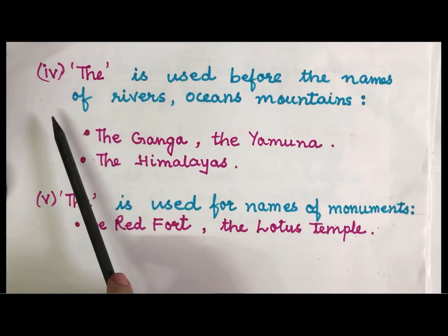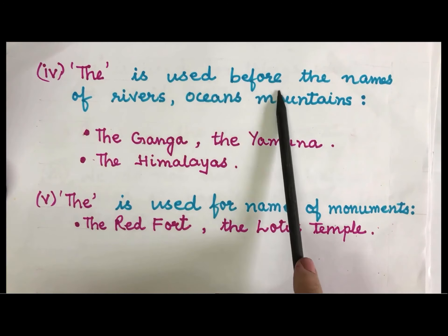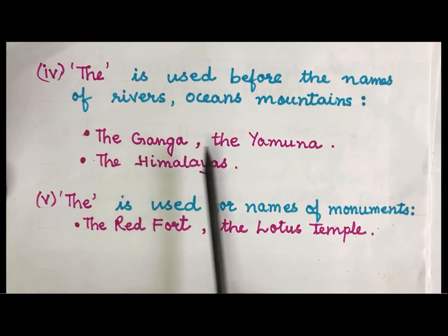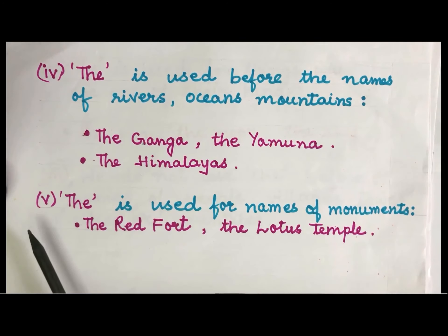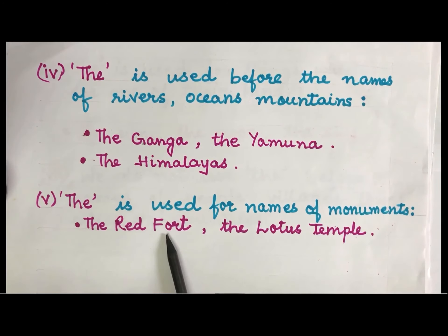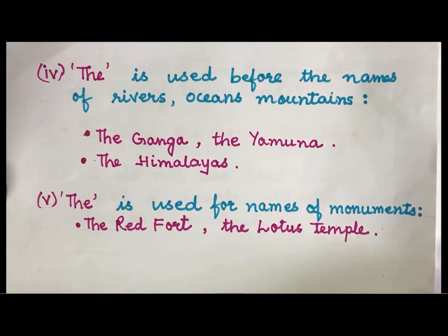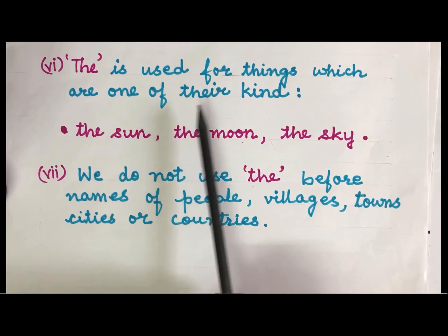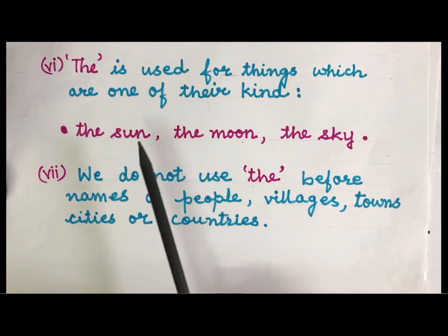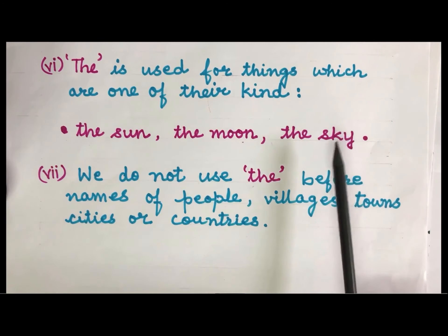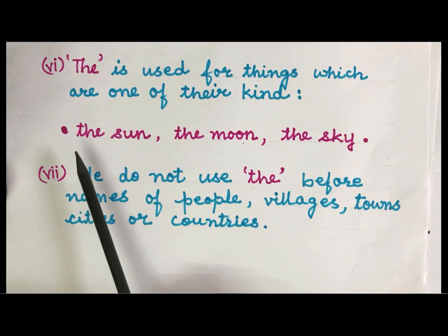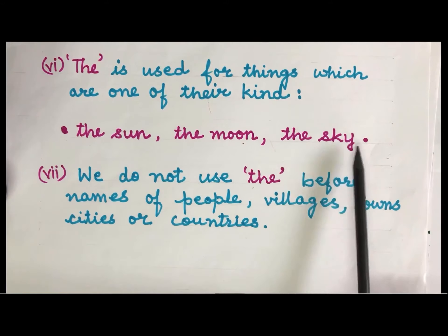The is used before the names of rivers, oceans, and mountains — for example: the Ganga, the Yamuna, and the Himalayas. The is used for names of monuments — the Red Fort, the Lotus Temple. The is also used for things which are one of their kind — there is only one sun, one moon, and one sky — so we say the sun, the moon, and the sky.